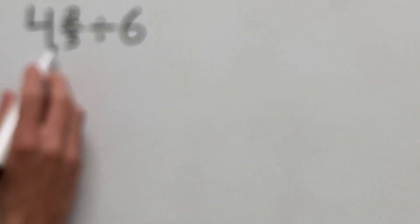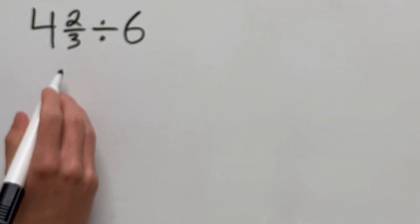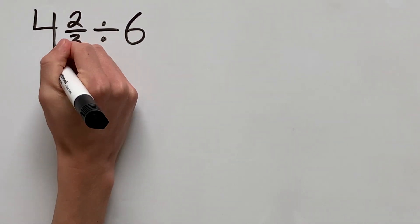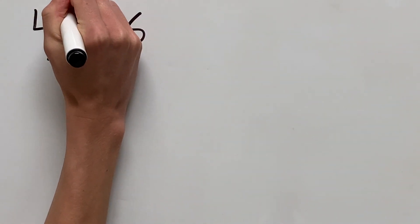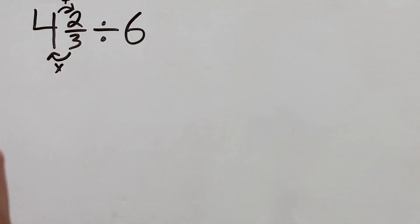To do that, we can convert 4 and 2 thirds into a fraction by multiplying the denominator with the whole number at the front and then adding that to the numerator.